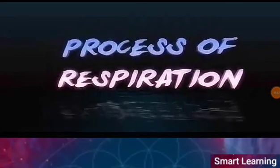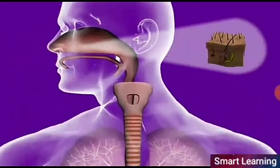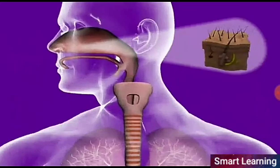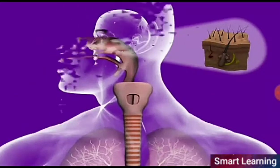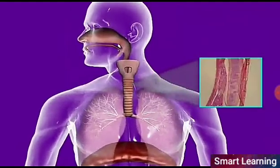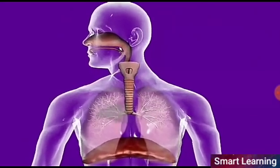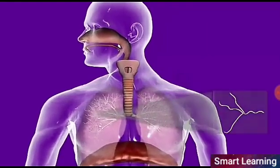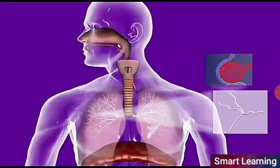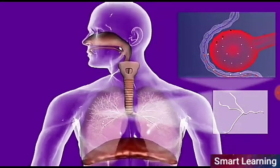In the process of respiration, air is taken into the body through the nostrils. The air passing through the nostrils is filtered by fine hairs that line the passage into the lungs. Rings of cartilage present in the windpipe ensure that the air passage does not collapse. Within the lungs, the passage divides into smaller and smaller tubes which terminate in balloon-like structures called alveoli.